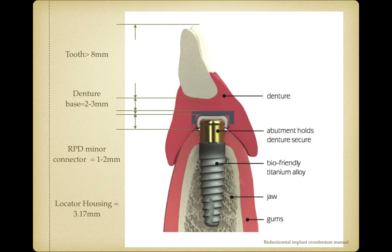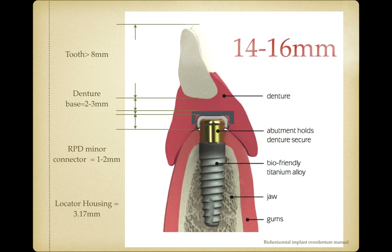So what exactly are the space requirements for an implant with an RPD design? The implant attachment housing — if using a locator — is 3.17 millimeters, which is the minimum height for any attachment used with an implant. The RPD framework minor connector takes another 1 to 2 millimeters. The denture base, to avoid fracture, ideally needs 2 to 3 millimeters thickness. And the denture teeth are typically around 8 to 10 millimeters in height. Adding all of this up, the total space from the gingiva to the opposing tooth needs to be approximately 14 to 16 millimeters. Without that space, you start sacrificing the thickness of these four components and create more problems.